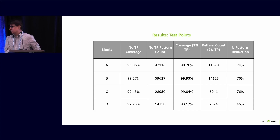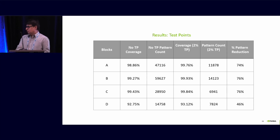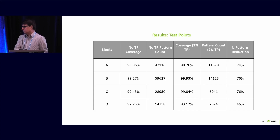These are the test point results. Without using TP, the number of patterns is very high — block A has 47k pattern count. Once we enable TP and insert 2% TP, we are able to reduce the pattern count by 74% to around 12k. In block B, with 2% TP, we are able to bring the pattern count down to 14k. In block C, the reduction is 76%, and in block D, 46%.